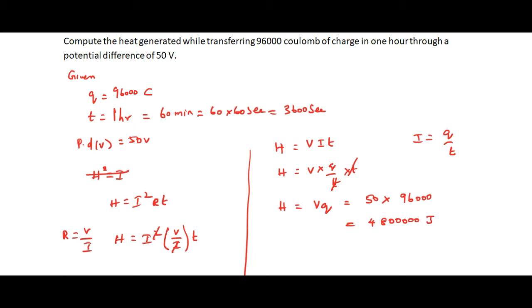We can express this in kilojoules: 4,800,000 joules equals 4,800 kilojoules. So finally, 4,800 kilojoules is generated while transferring 96,000 coulombs of charge.